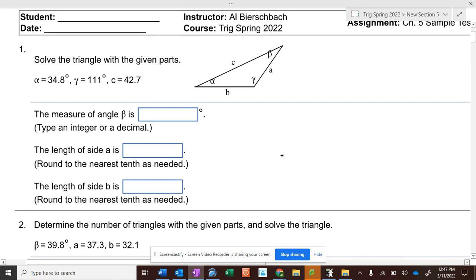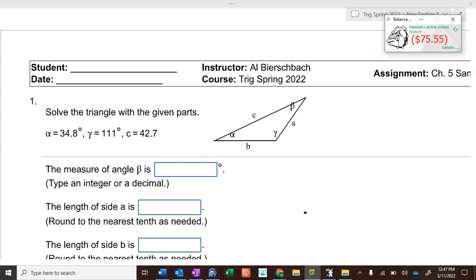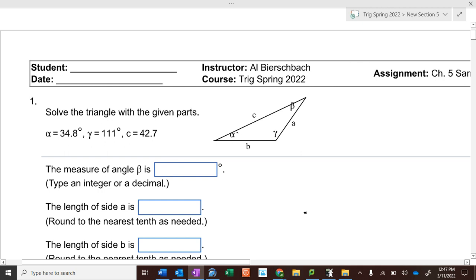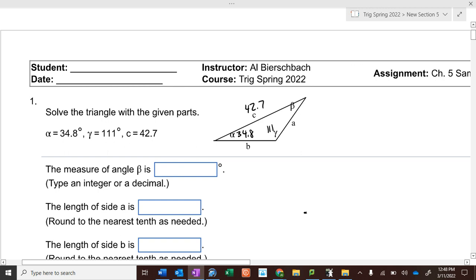How would we solve this triangle? Well, what are we given? We are given angle 34.8, 111, and 42.7. So we're given angle-angle-side, which is fine. It's side-side-angle that we run into issues with. So if we have opposites, we keep working with opposites.